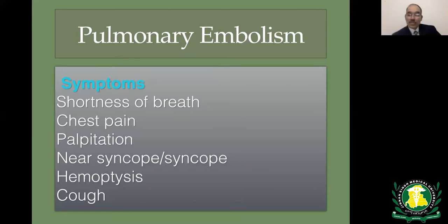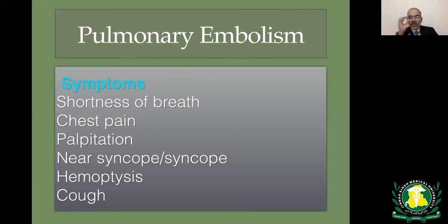Symptoms include shortness of breath, which is the most common and is sudden in onset — typically lasting hours to a day or two, not weeks. Patients may present with pleuritic chest pain, or with angina-like pain due to right ventricular ischemia from a large clot burden. Hemoptysis can occur in pulmonary infarction, and large clots may cause syncopal episodes. Cough is usually dry.